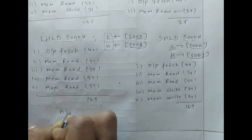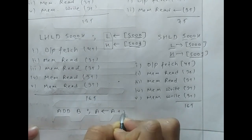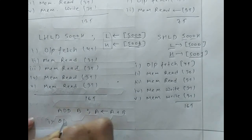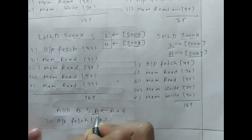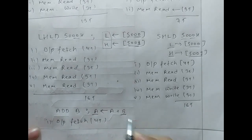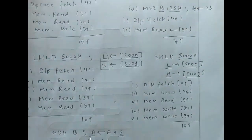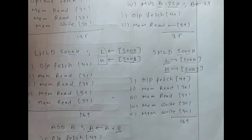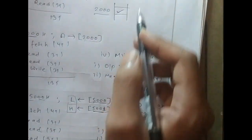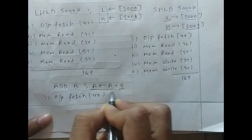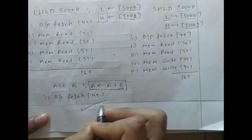Now let's take the example of a simple instruction: ADD B. The work of this instruction is A gets A plus B. First, as usual, opcode fetch is 4T states. The A register is inside the processor and the B register is inside the processor. Since this is a one-byte instruction, the fetch and decode are both completed during the opcode fetch phase. Execution is done inside the processor because all required registers are already present — no memory read or write operation is needed. Total: 4T states.